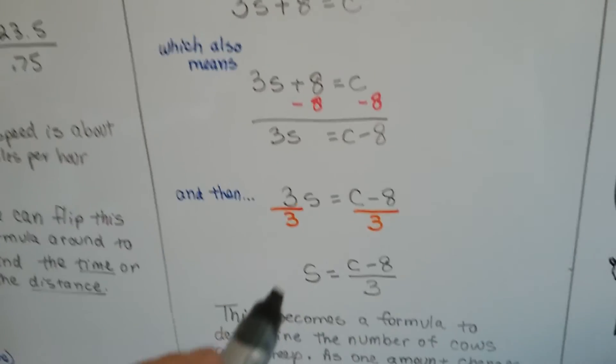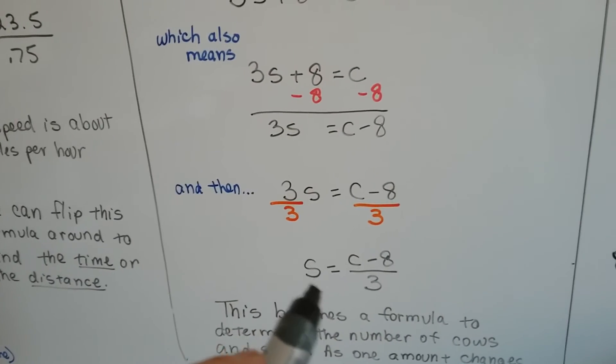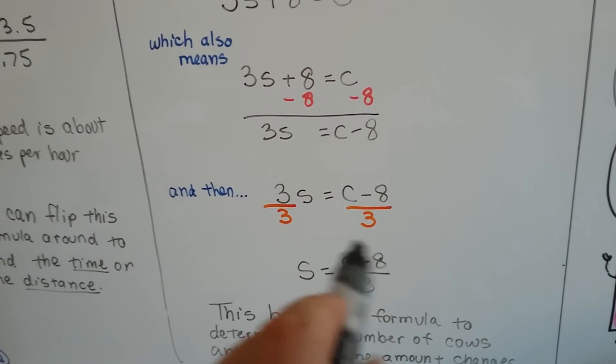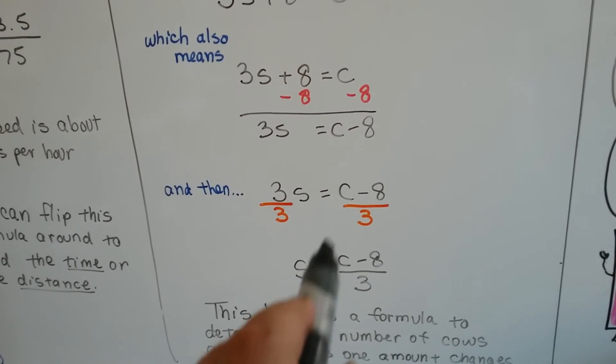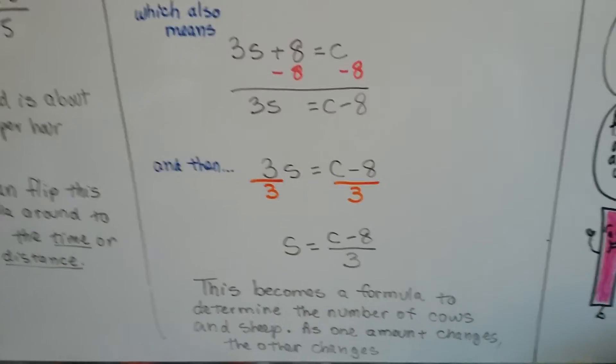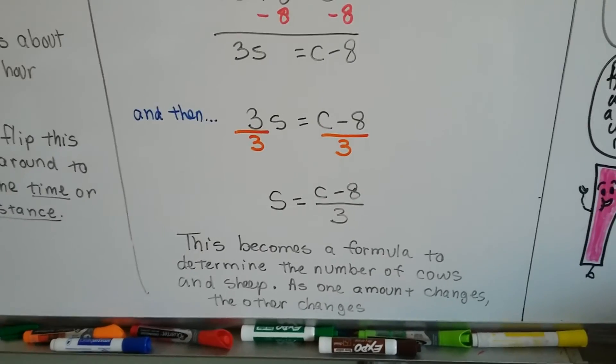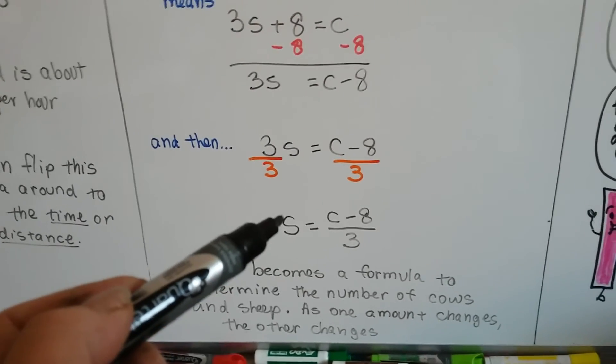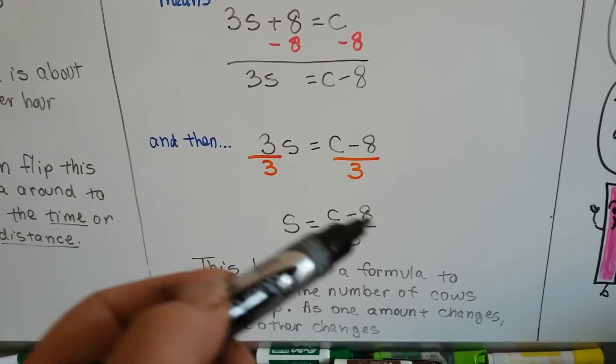And then we end up with the number of sheep is equal to cows minus eight divided by three. And that is actually our answer. C minus eight over three is our answer. And this becomes a formula to determine the number of cows and sheep. If the sheep increases then this will increase.